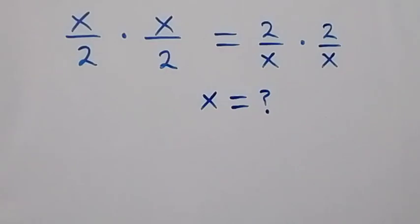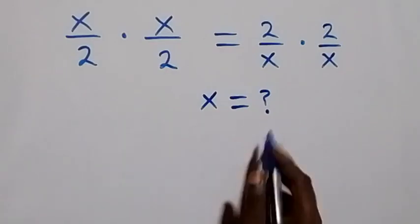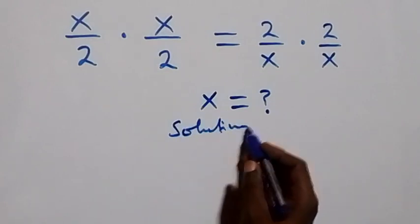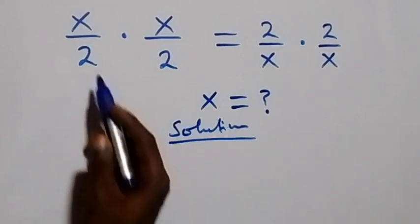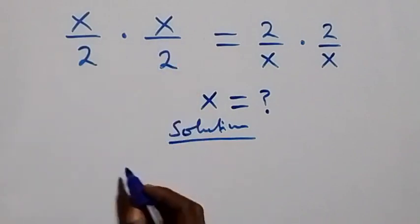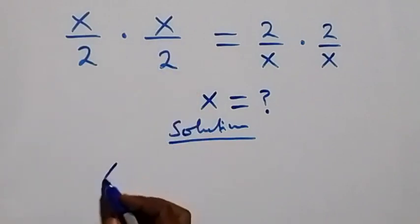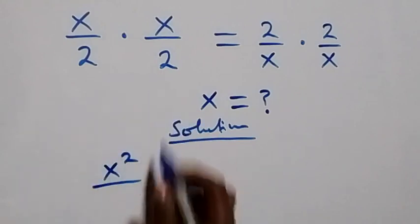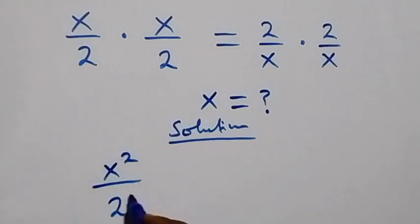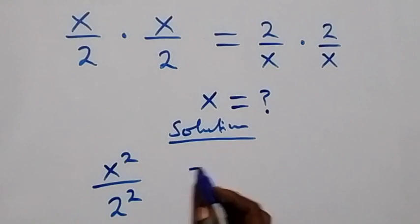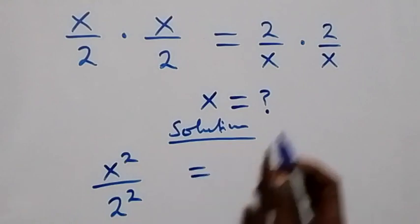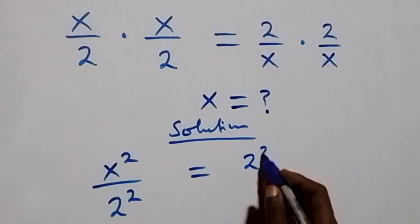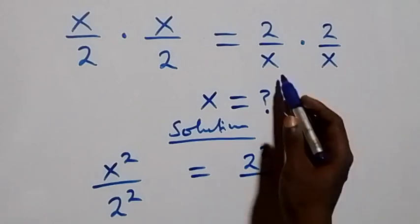Hello, you're welcome. Here's how to solve this nice algebra problem. We can write x times x as x squared, and two times two as two squared. The equation becomes x squared over two squared equals two squared over x squared.